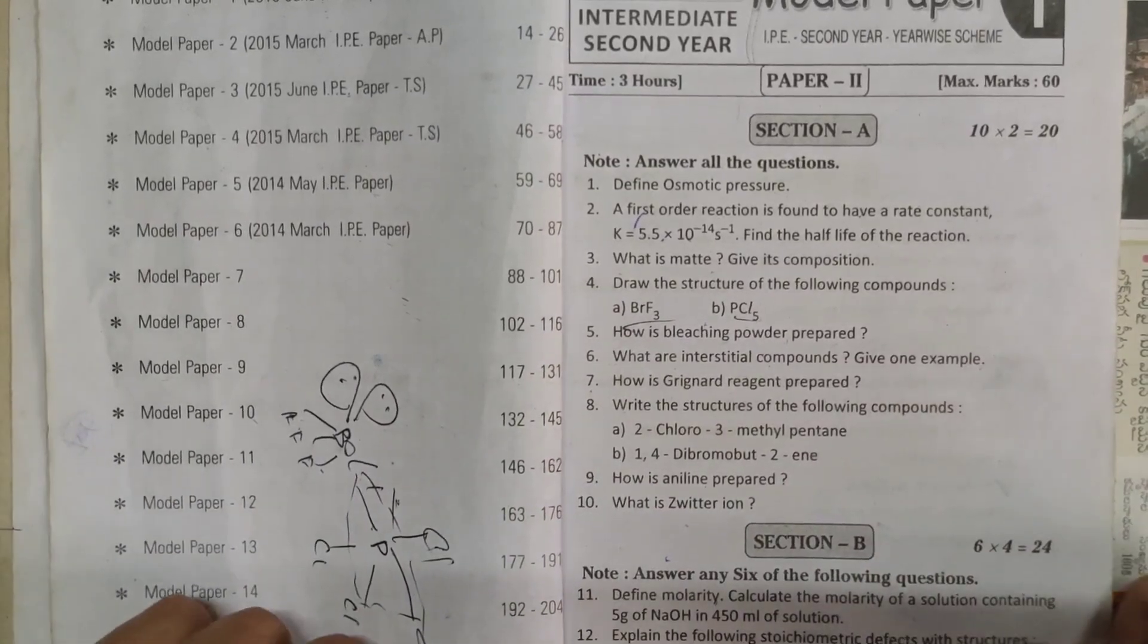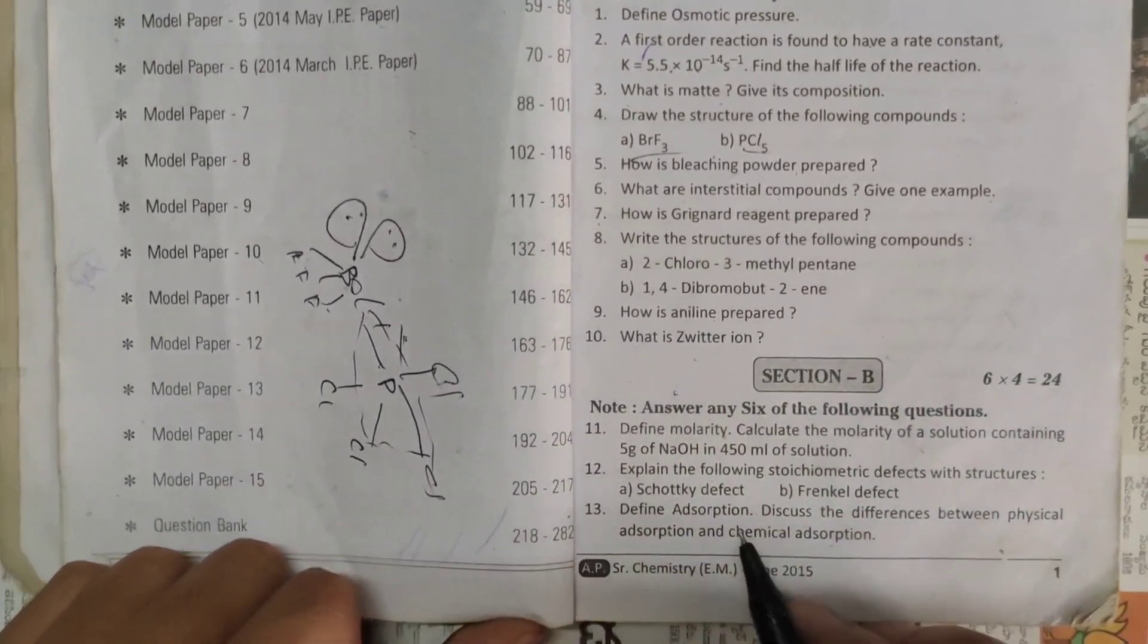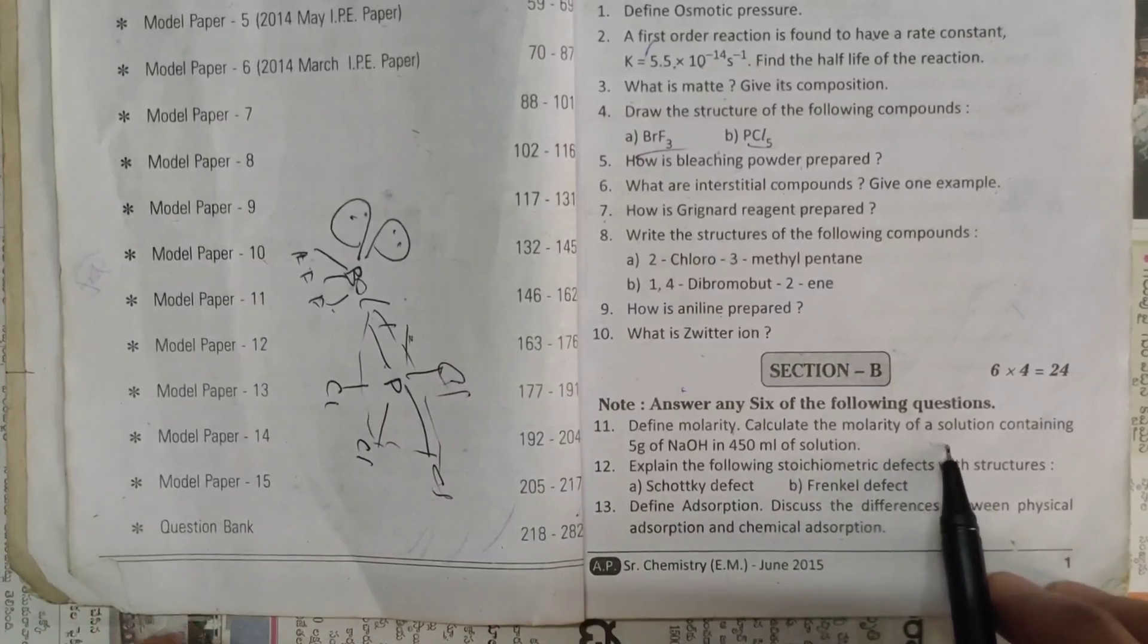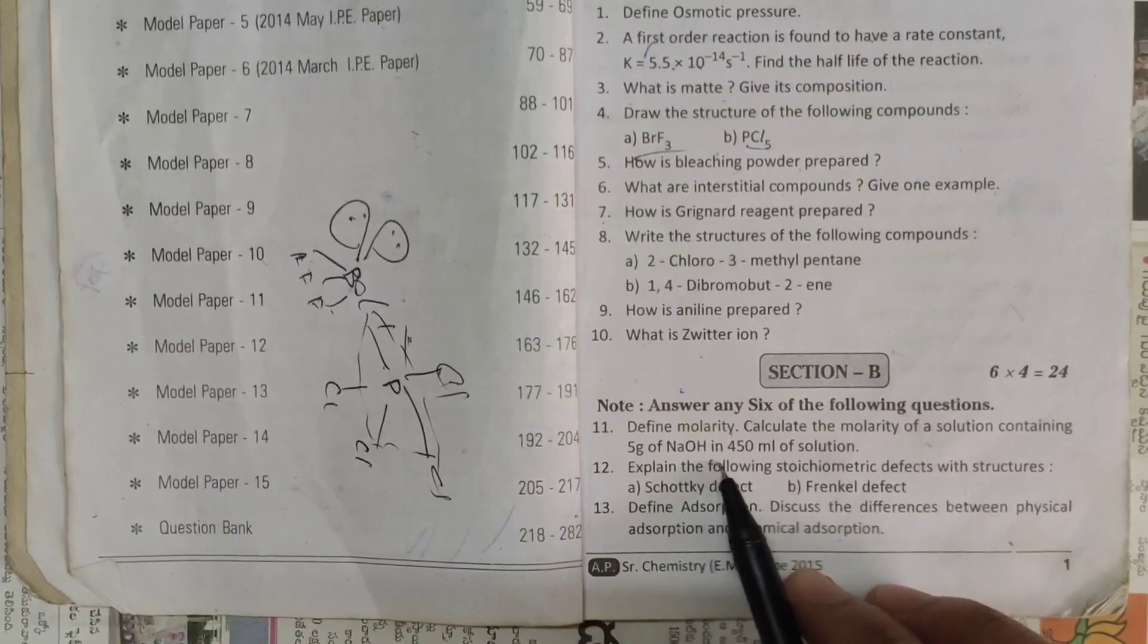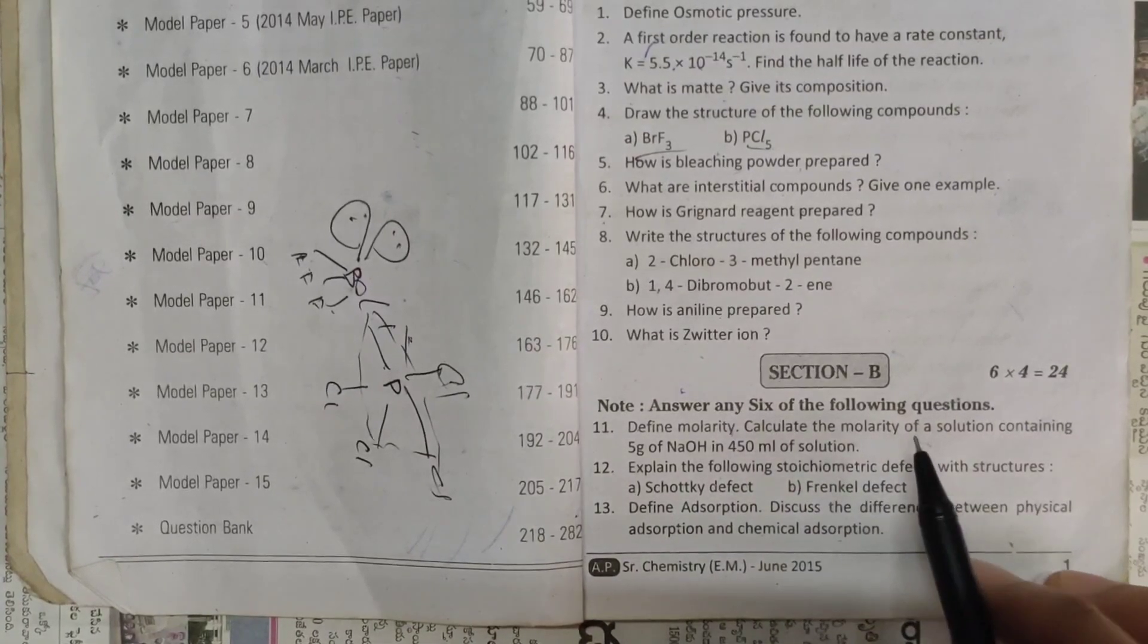And next one, Section B is define molarity. Calculate the molarity of a solution containing 5 grams of NaOH in 450 ml of solution. This is a problem.